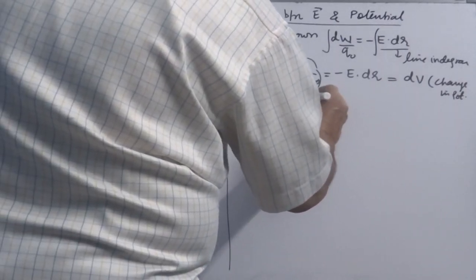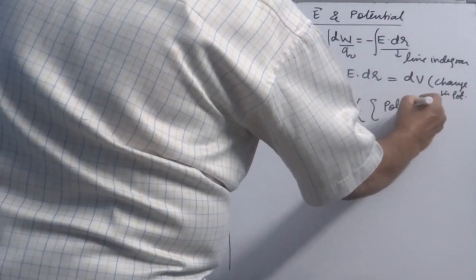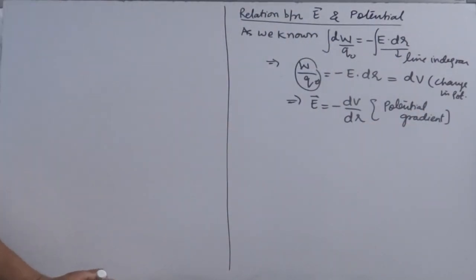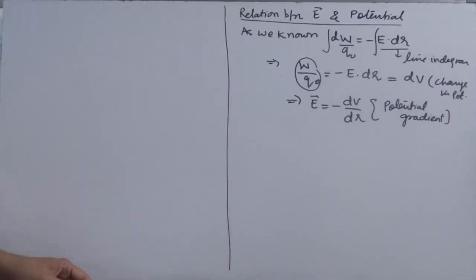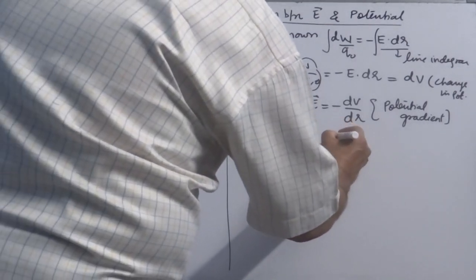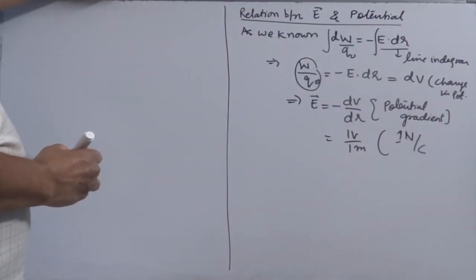From this relation, E = −dV/dr. This is called the potential gradient. The negative sign shows that potential decreases in the direction of the electric field. The SI unit for electric field from this relation is volt per meter (V/m), equivalent to newton per coulomb (N/C).